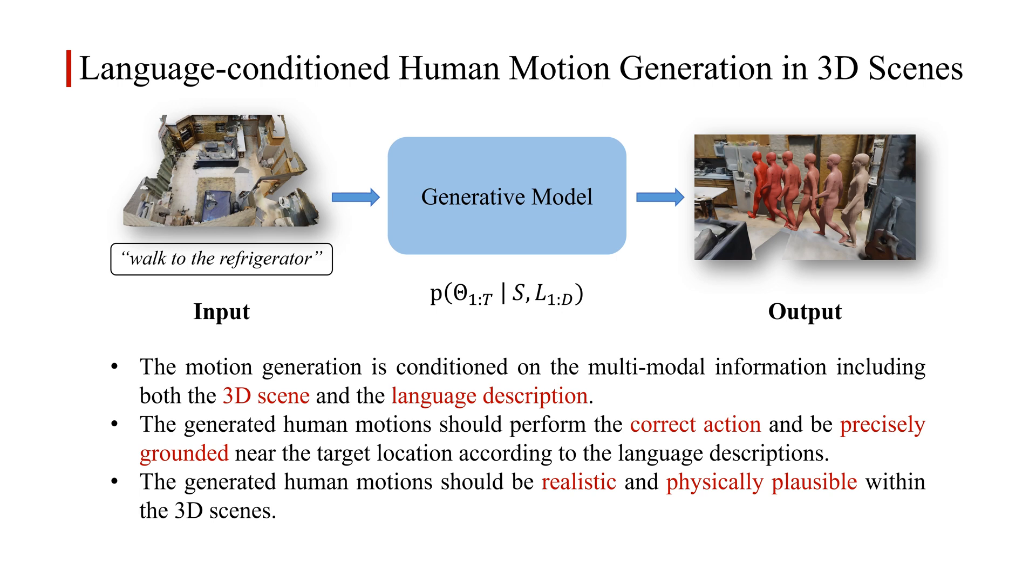The proposed task is more challenging than previous motion generation tasks in the following aspects. First, the motion generation is conditioned on the multimodal information including both the 3D scene and the language description. Second, the generated human motions should perform the correct action and be precisely grounded near the target location according to the language descriptions. Third, the generated human motions should be realistic and physically plausible within the 3D scenes.